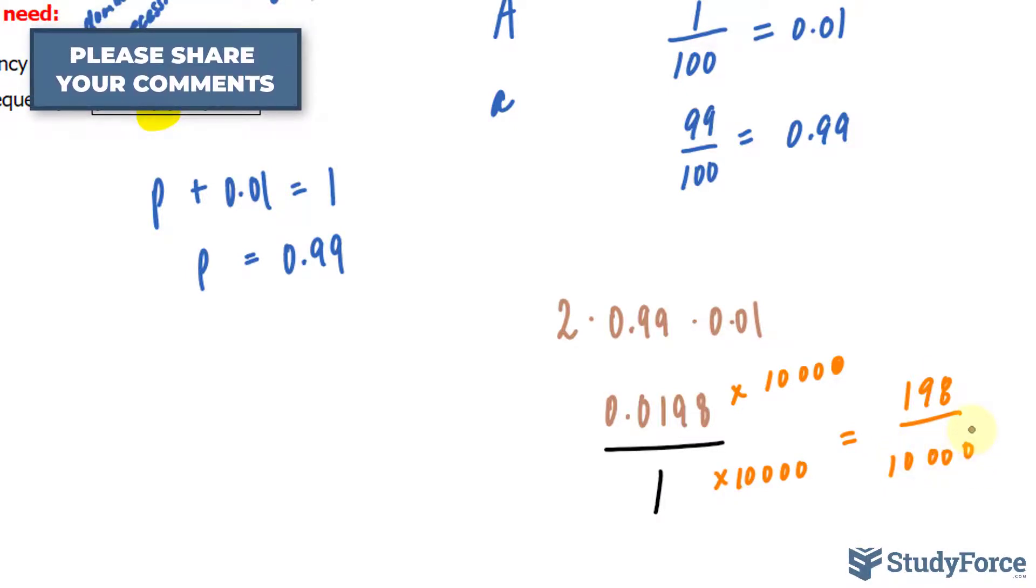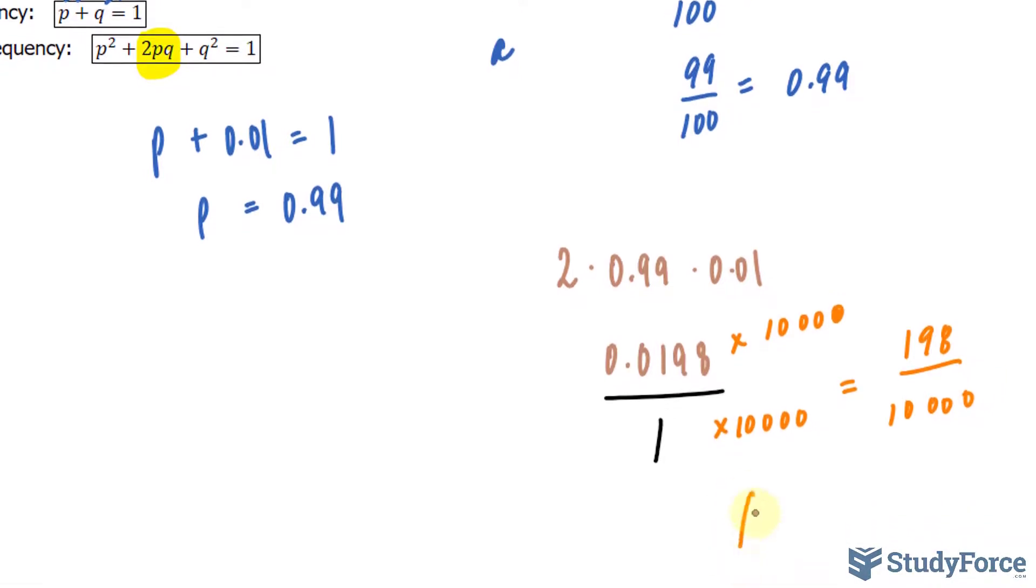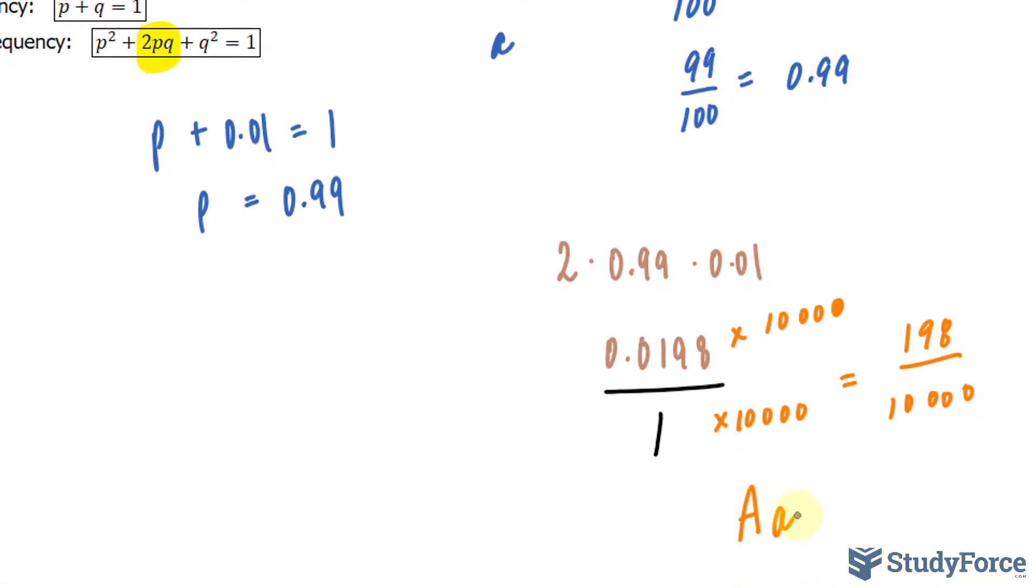So 198 individuals out of 10,000 are likely to have a genotype that has a recessive allele and a dominant allele, which makes them heterozygous. Multiplying this by 100% will give you a percentage of 1.98%.